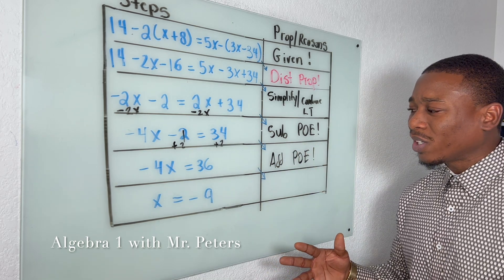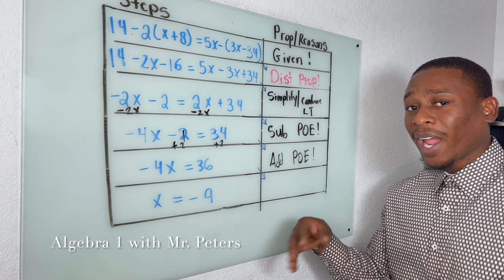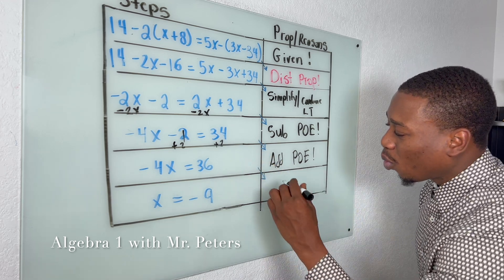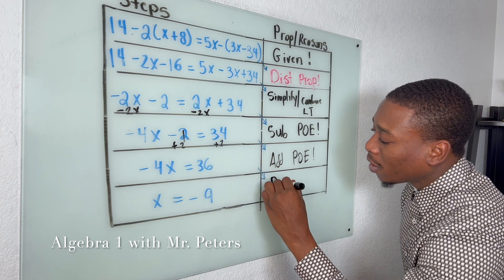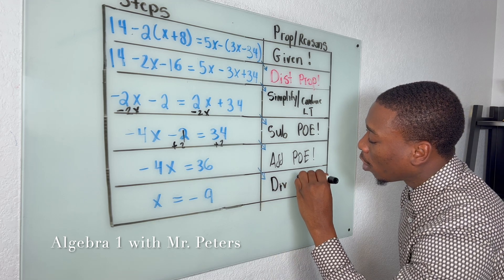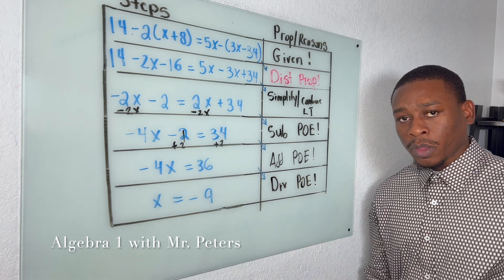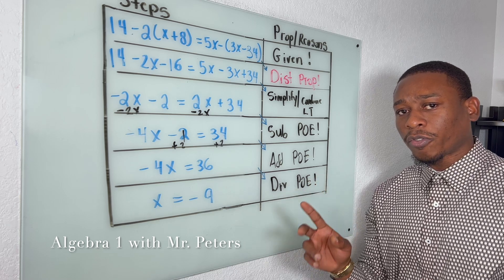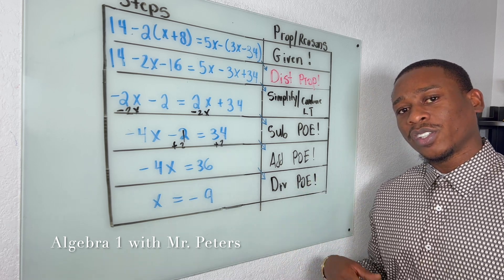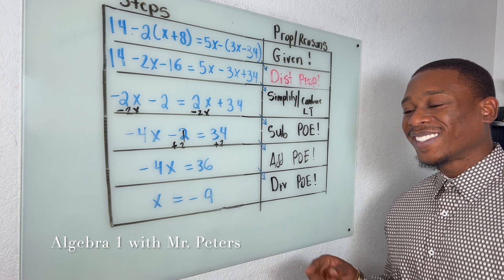And like I tell my students, the last step nine times out of ten is always going to be the division property of equality. So this is just our first problem of three — this is an introductory. Let's jump over into the next ones.